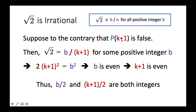If P(k+1) is false, then √2 = b/(k+1) for some positive integer b. Squaring both sides and rearranging gives 2(k+1)² = b². Since b² is even, b must also be even.